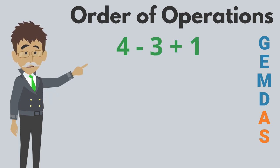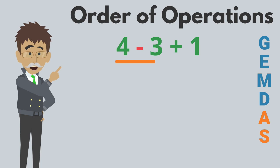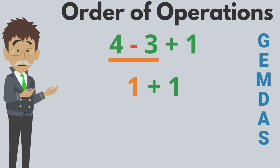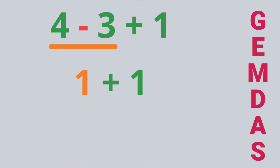In 4 minus 3 plus 1, we subtract 3 from 4 first to get 1, and then add 1 and 1 to get the final answer, which is 2. The acronym GEMDAS helps us remember the order in which we solve a math problem with multiple steps.